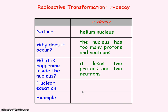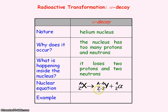For the nuclear equation, we have the parent nucleus — the nucleus that emits an alpha particle. The alpha particle has two protons so the Z number is two, and it has four nucleons (two protons and two neutrons) so the nucleon number is four. The daughter nucleus Y will have a proton number of Z minus 2 to conserve the Z number, and a nucleon number of A minus 4 to conserve the nucleon number.